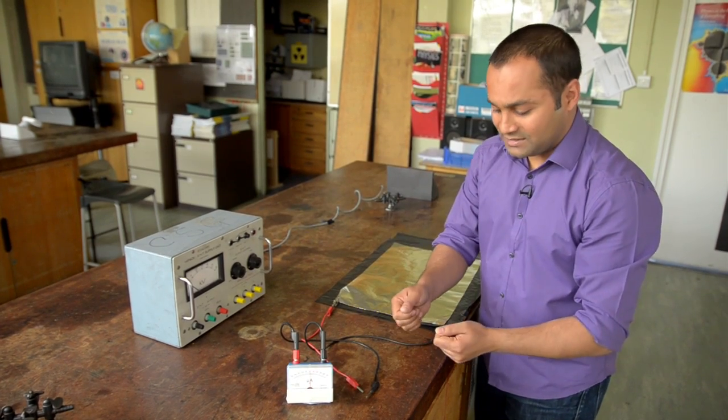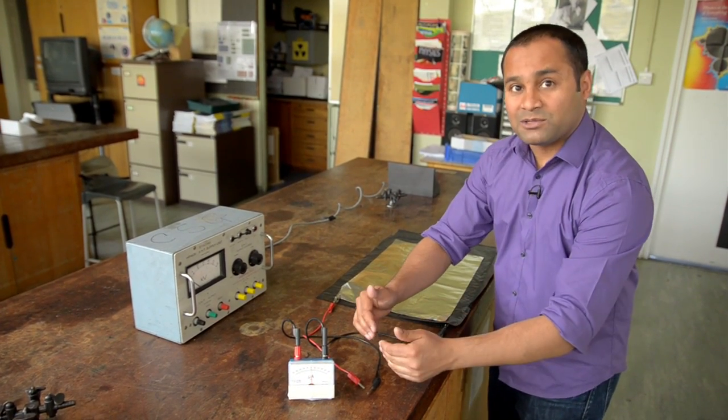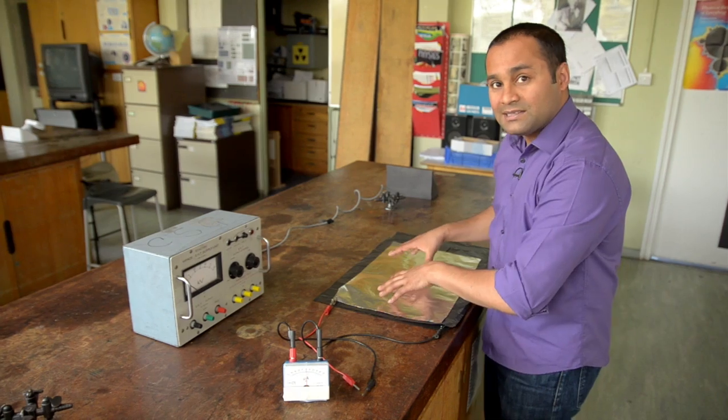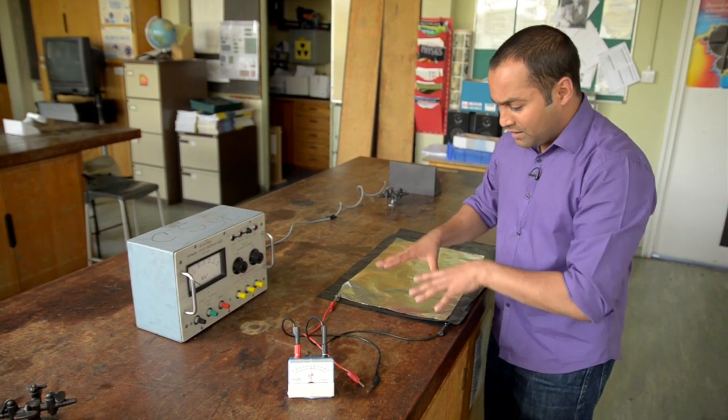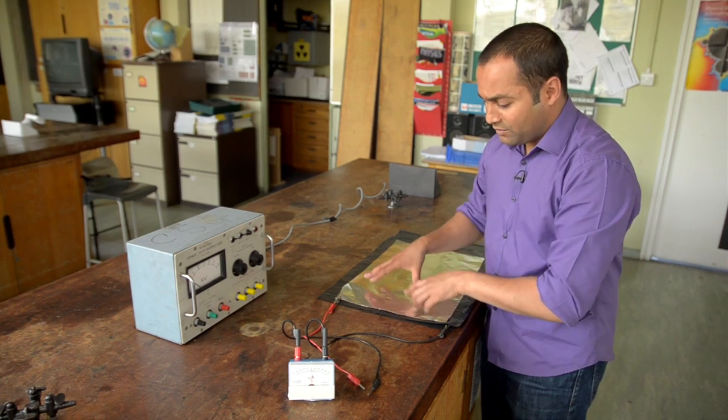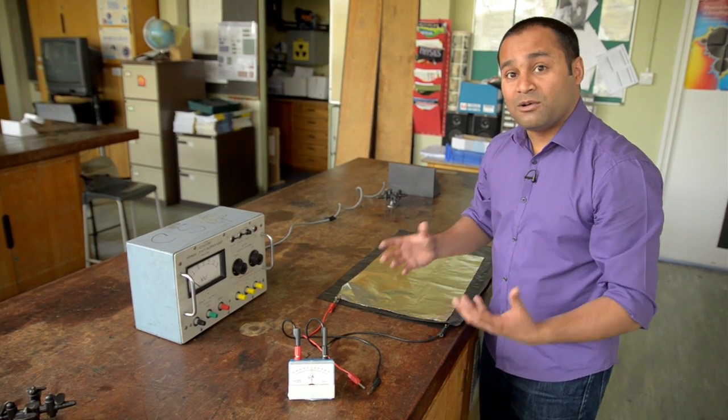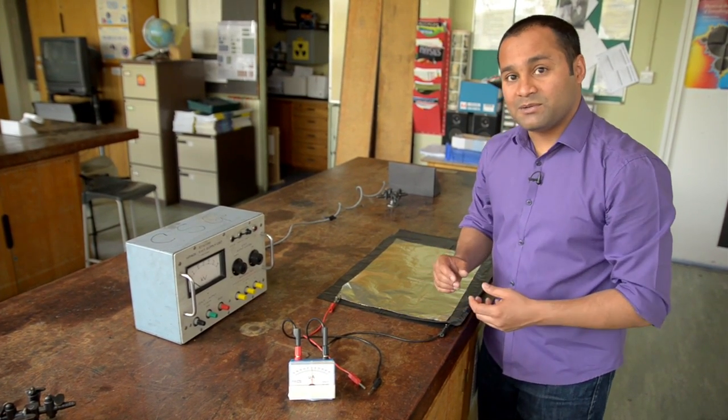When I discharge the capacitor, electrons move off the bottom plate and onto the top plate. And once again, it's this flow of charge that gives us the current. The current stops when the bottom plate and the top plate are no longer charged, so the potential difference between them is zero.